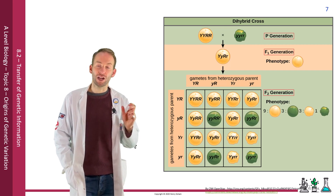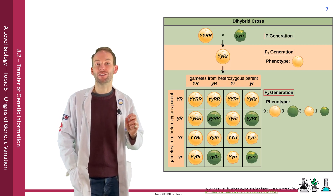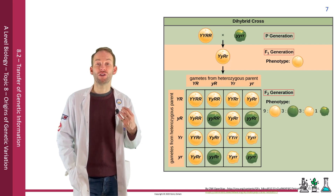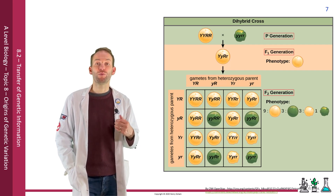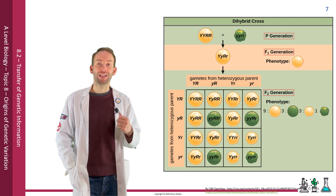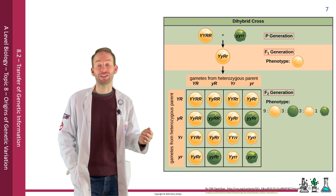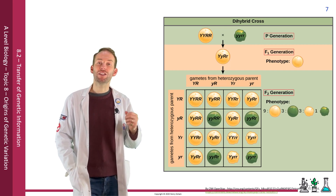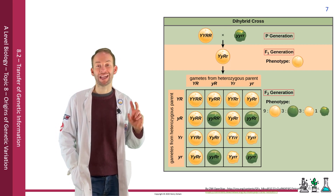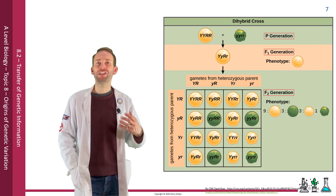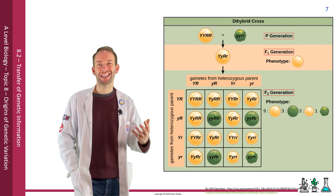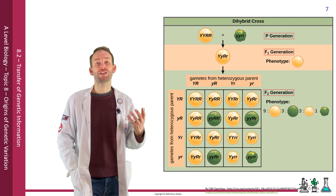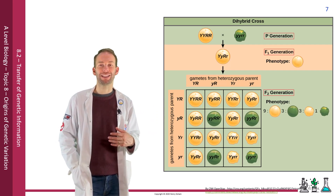The key point here is that the heterozygous parent can give rise to four different gametes: YR, Yr, yR, and yr. It must pass an allele for each gene in the gamete, but it could be either one — remember they're independent of each other. With a large enough sample size, as Mendel used with pea seeds, you'd expect to see this type of ratio appearing.